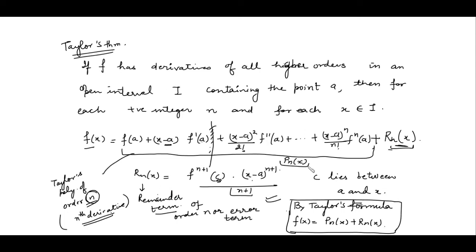By Taylor's formula, if we can express a function as a polynomial of order n plus remainder of order n, and if this remainder term goes to 0 as n approaches infinity, then we say our Taylor series converges to the same generating function f(x). So the requirement is: the remainder term must go to zero as n → ∞, and all higher-order derivatives must exist in interval I containing a.